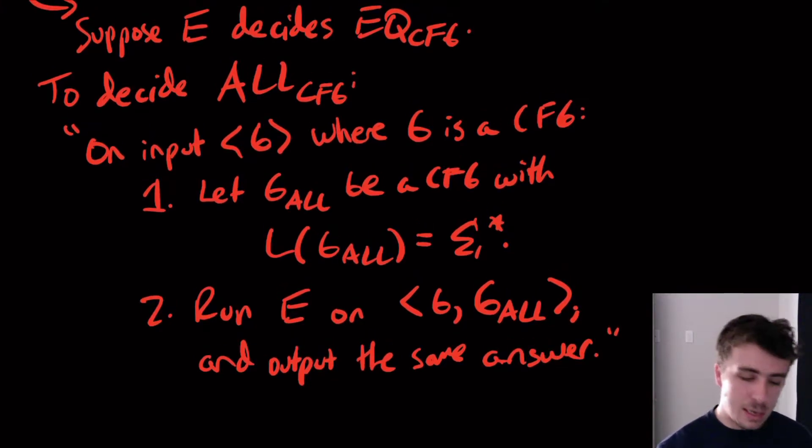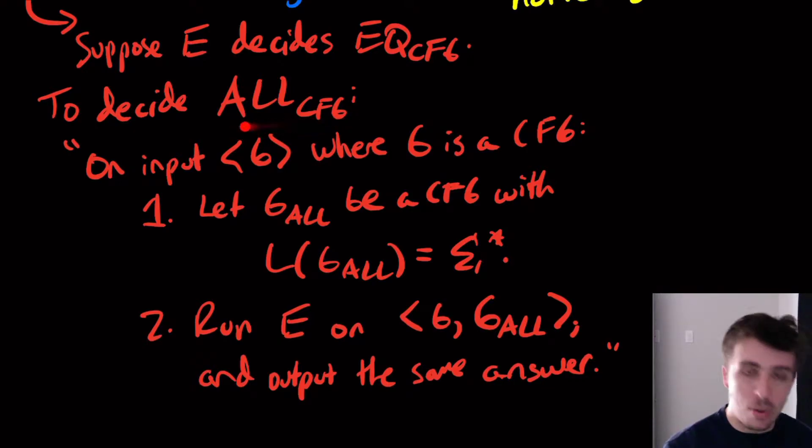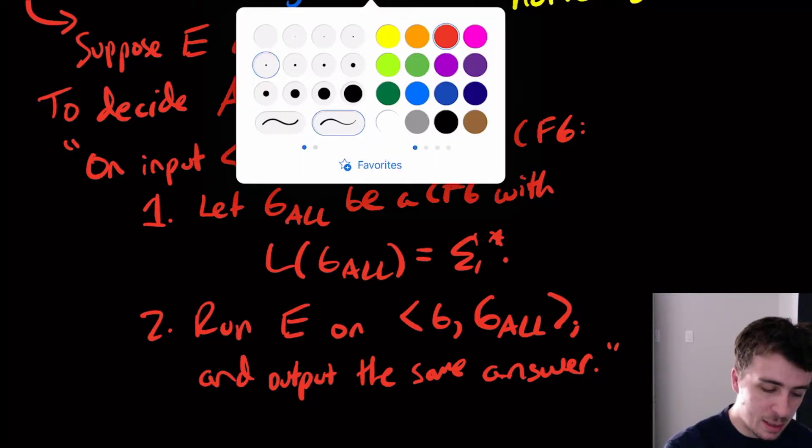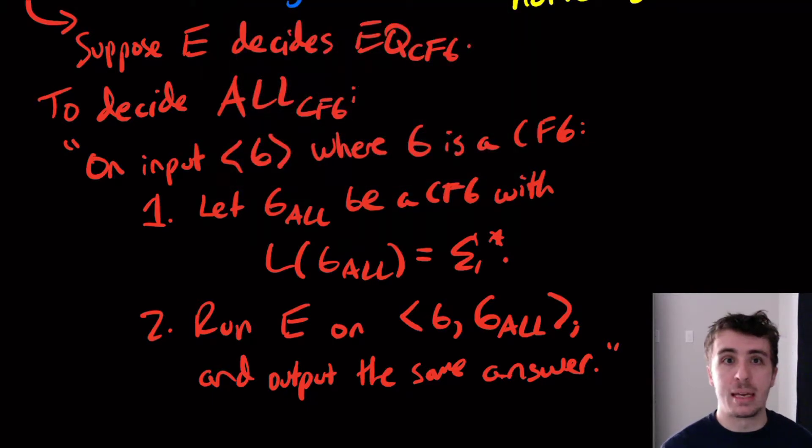So we know that the all problem is undecidable, so that would imply that the EQ problem is undecidable. Because if EQ was decidable, then this thing would be a decider for the all problem, but all is undecidable. So that's a quick proof that the EQ problem is undecidable.